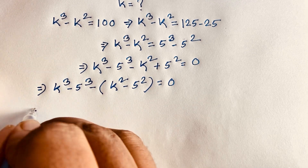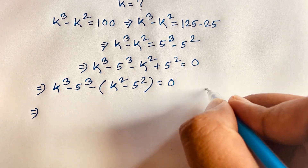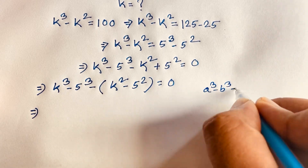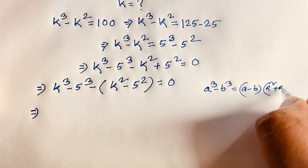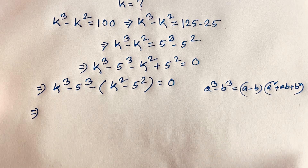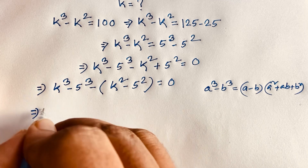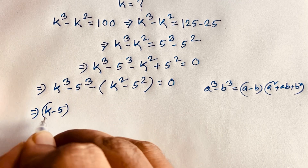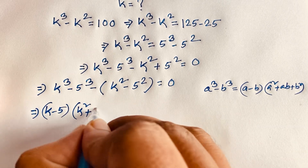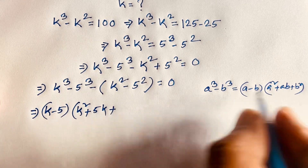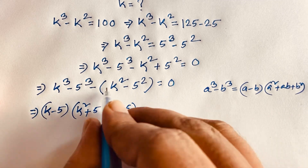For this expression, k³ minus 5³, we know that a³ minus b³ equals (a - b)(a² + ab + b²). So k³ minus 5³ equals (k - 5) times (k² + 5k + 25).